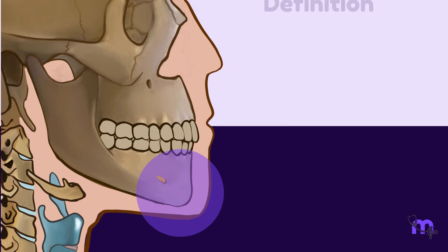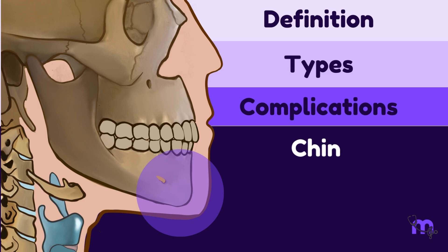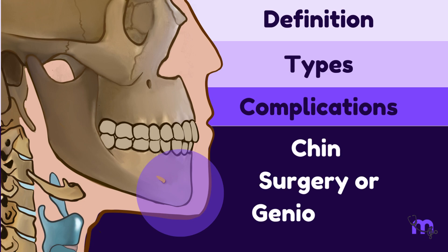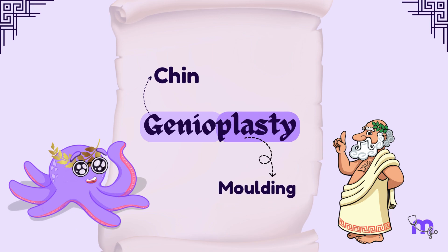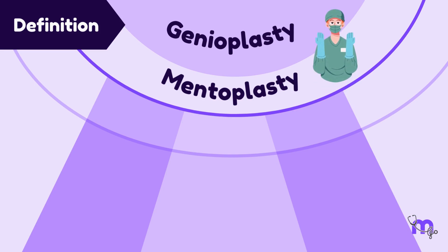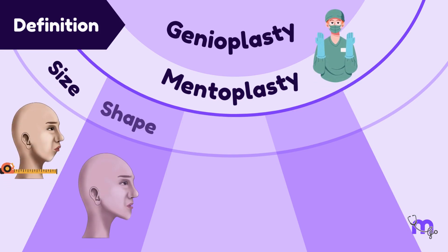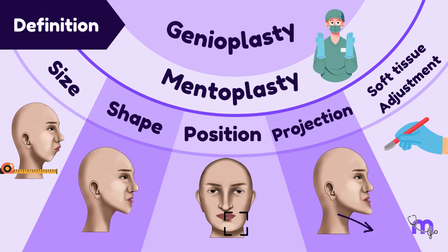In this video, we will discuss the definition, the types and complications of chin surgery, or genioplasty. The term genioplasty comes from two Greek words: genio, meaning chin, and plasti, meaning moulding. Genioplasty, also referred to as mentoplasty, is a surgical method employed to modify the size, shape, position, and projection of the bony chin, along with corresponding adjustments to the nearby soft tissues.